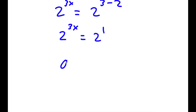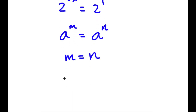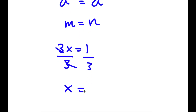Now, if I have something in the form a to the power of m equal to a to the power of n, this means that m is equal to n. So in this case, 3x is equal to 1. And if I divide both sides by 3, I get x is equal to 1 third.